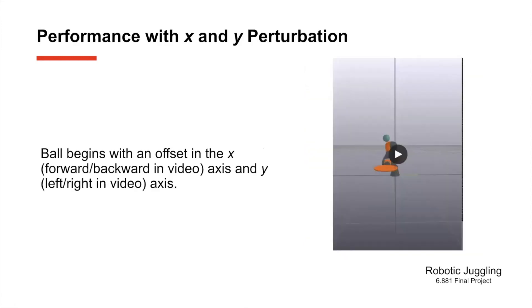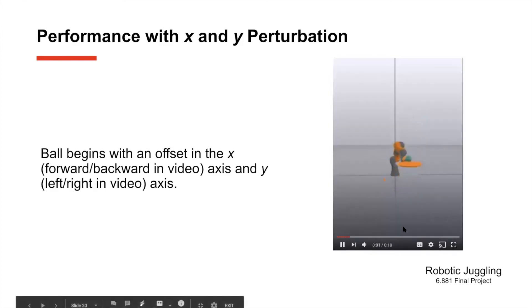Finally let's look at a perturbation in both the x and the y direction. When I start the video you'll see the ball start to the right and then a little bit closer to us than the central point. You can see as expected there is some oscillation around the central point but it is able to hit it back and bring it around the central point fairly gently and in control.